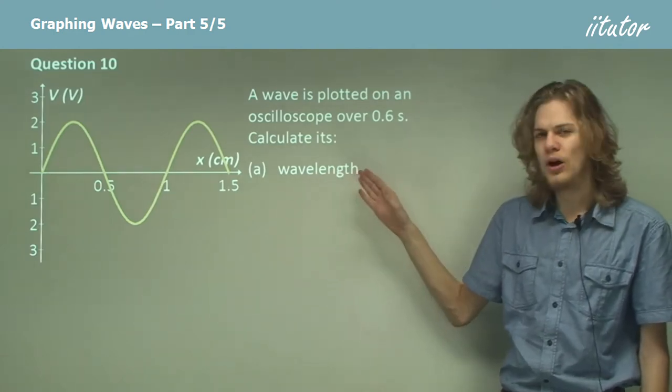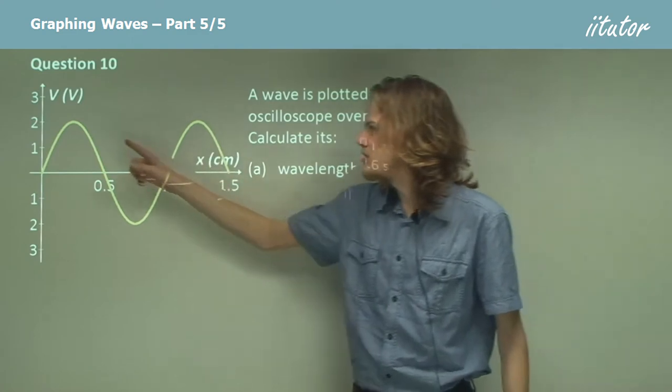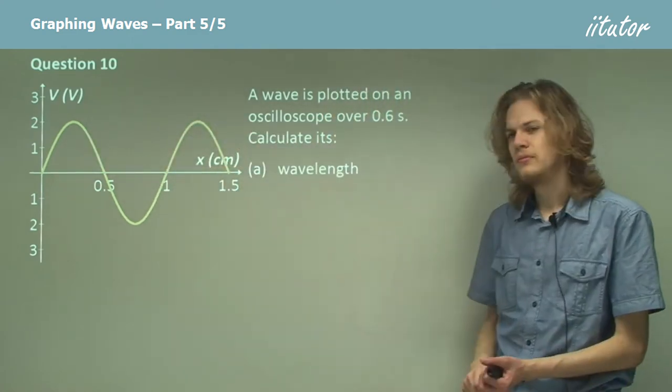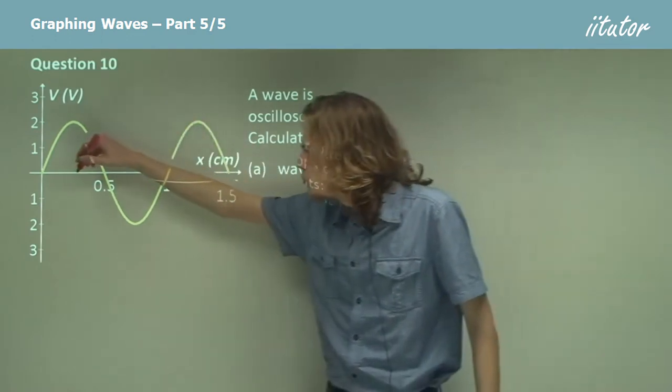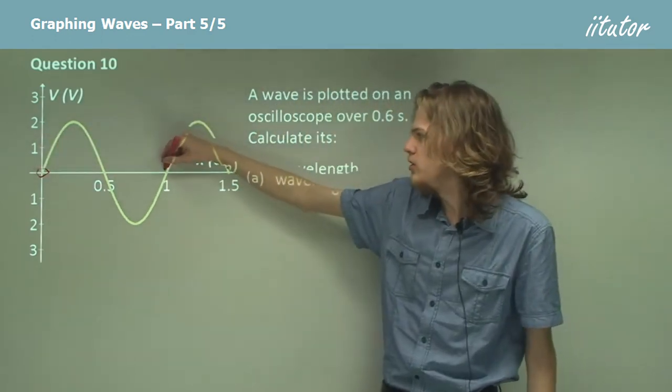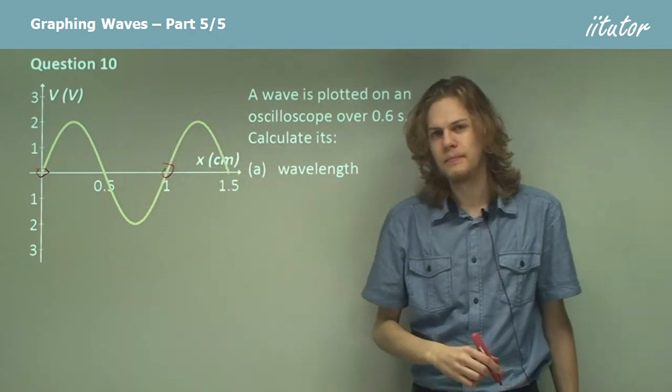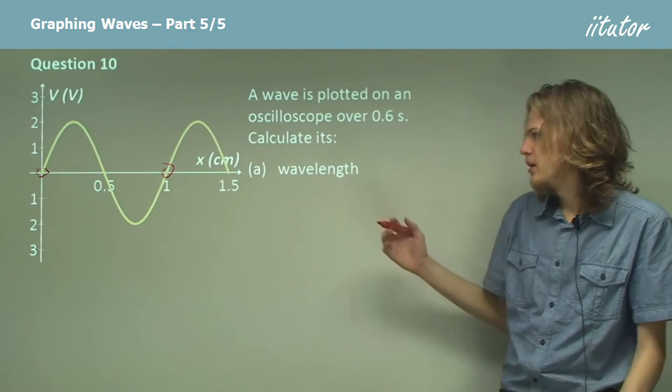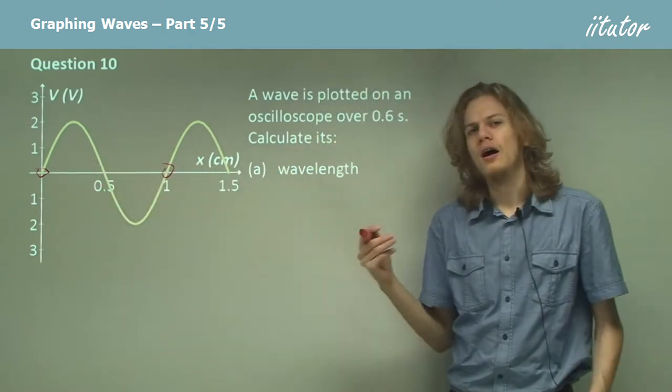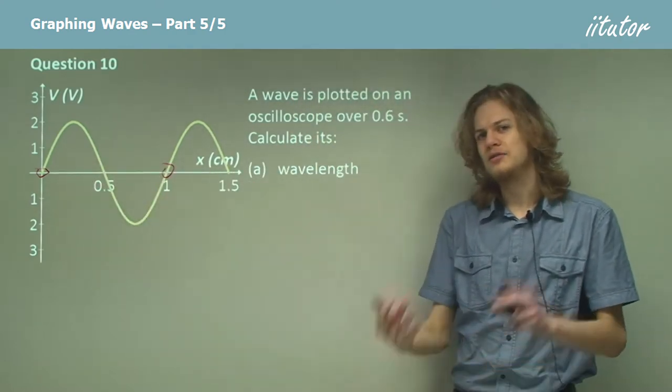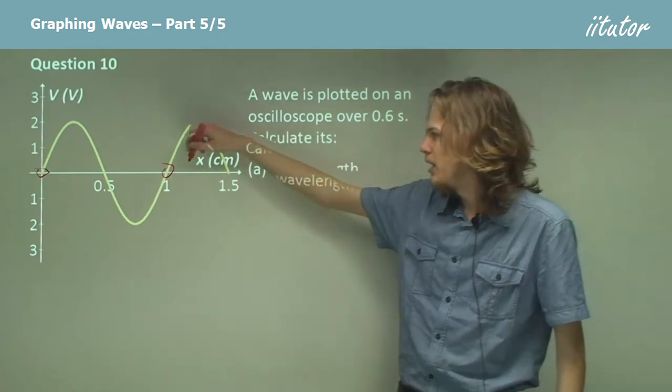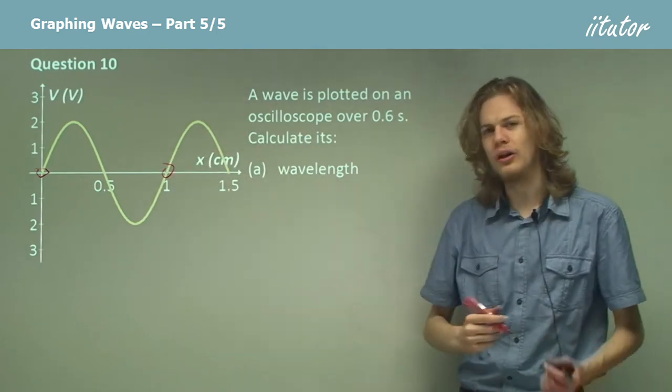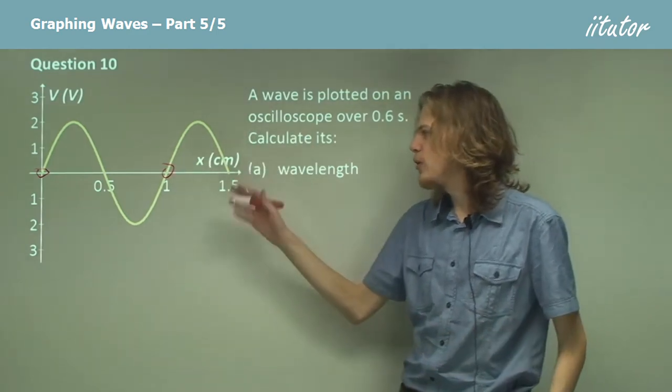That means that we can find its wavelength by measuring the distance between two successive crests or two points in the same pattern of the wave like these points here. Can you see why that works? At both these points, the wave is at its maximum slope and we're at the same part of the pattern. We're heading up toward a crest, so these two parts of the wave are identical.